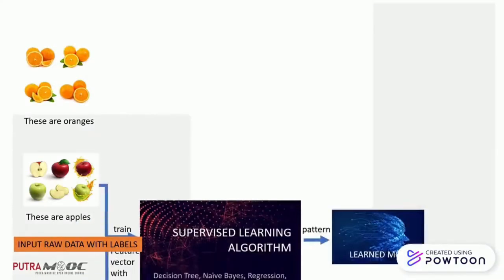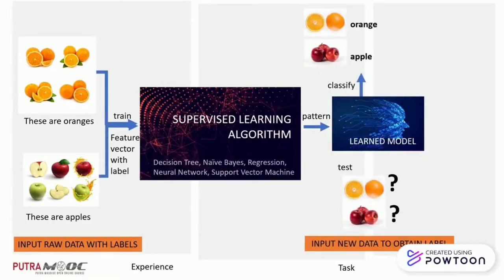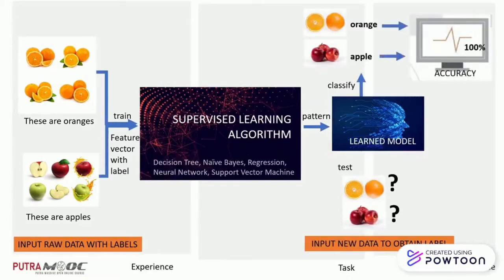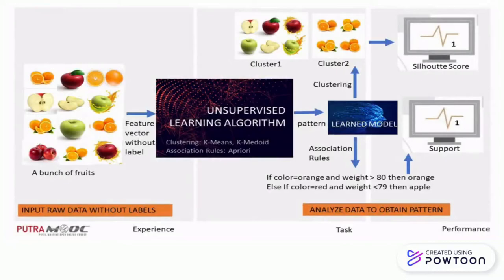Supervised algorithm learns about the dataset based on the labels, so it looks into the features to come out with classification and prediction. Meanwhile, unsupervised learning algorithm learns about the dataset by looking at the similarities and differences among the features to come out with clustering and association rules.